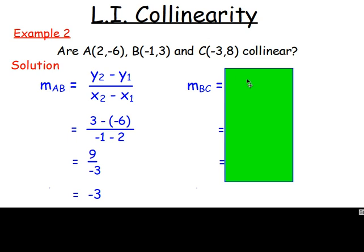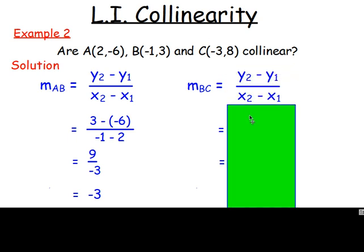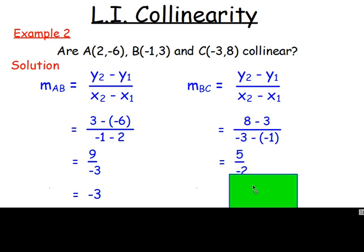Doing the same thing for B, C. If I do Y2 take Y1 over X2 take X1, I'd have eight take away three over negative three take away negative one, which will then become negative three add one. So on the top, that gives me five. On the bottom, I would have negative two. Simplifying that, well, five over negative two. No, there's no common factors. So really, I'm just leaving it as the negative five over two. I could write it different ways. But really, from this, you can see that the gradients are not the same.